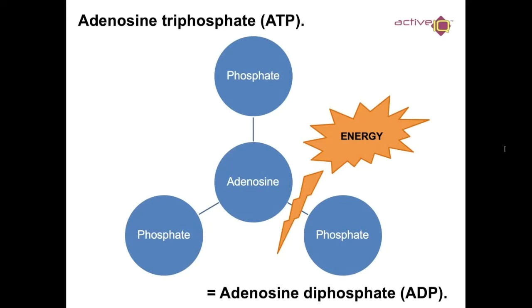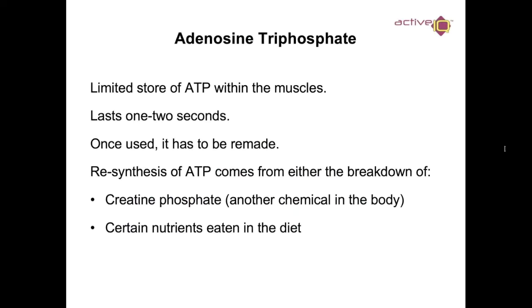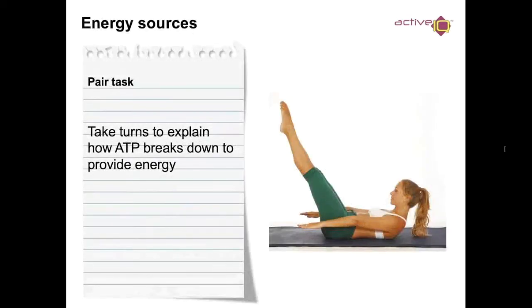So there's a breakdown: you've got phosphate, which breaks down into adenosine and then two phosphate molecules, which equals adenosine triphosphate, which creates the energy. Adenosine triphosphate is a limited store of ATP within the muscles — it lasts one to two seconds, and once used it has to be remade. Resynthesis of ATP comes from either the breakdown of creatine phosphate or certain nutrients eaten in the diet. Take a turn to explain how ATP breaks down to provide energy.